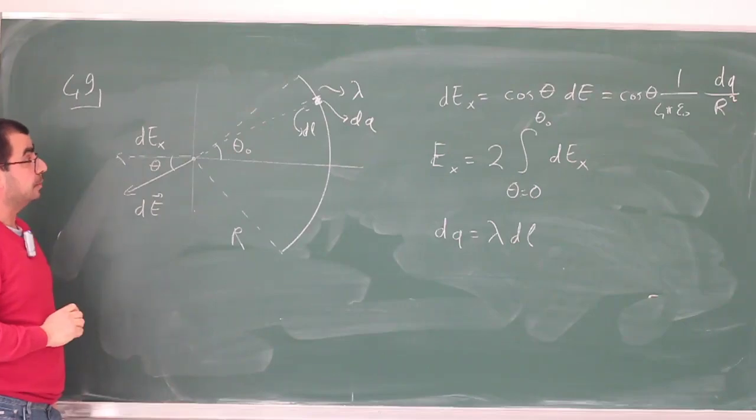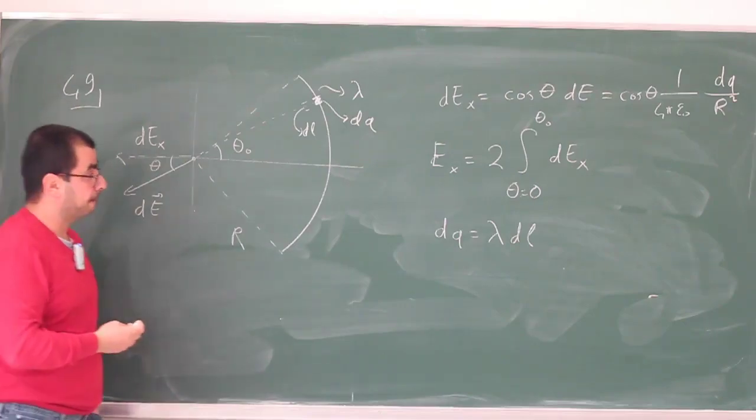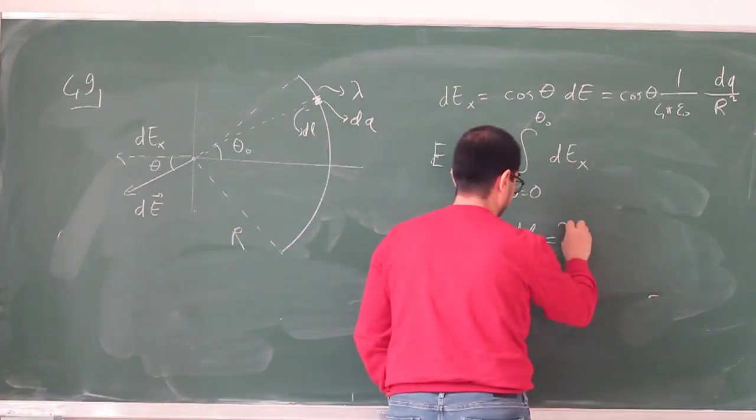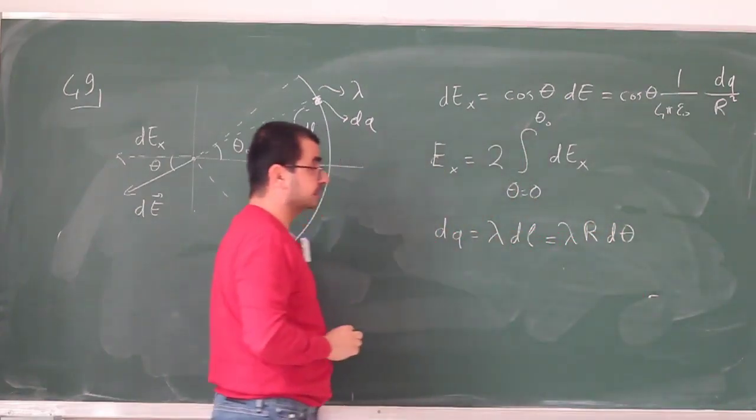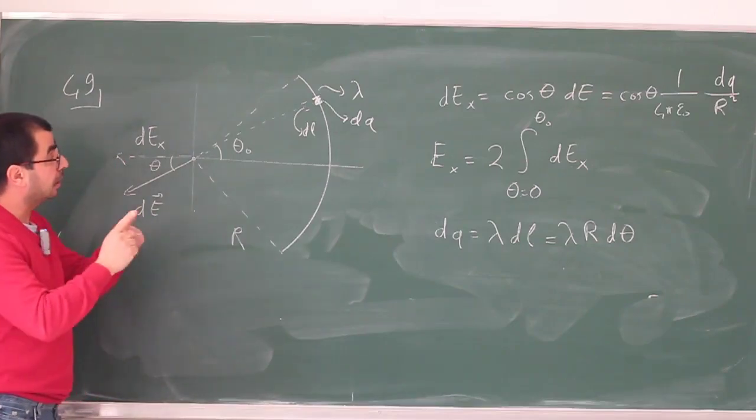And that dℓ can be written in terms of θ. It's just R times dθ.